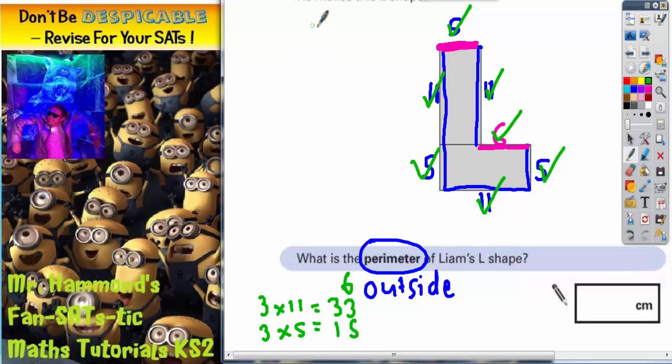So all we've got to do is add these numbers together. So it's 6 plus 33 plus 15. Add them together and we'll get the total distance. 6 plus 3 is 9. Plus 5 is 14. Put your 4 in and carry your 1. 3 plus 1 is 4. Plus that extra one that we've carried is 5. So the final answer is 54 cm.